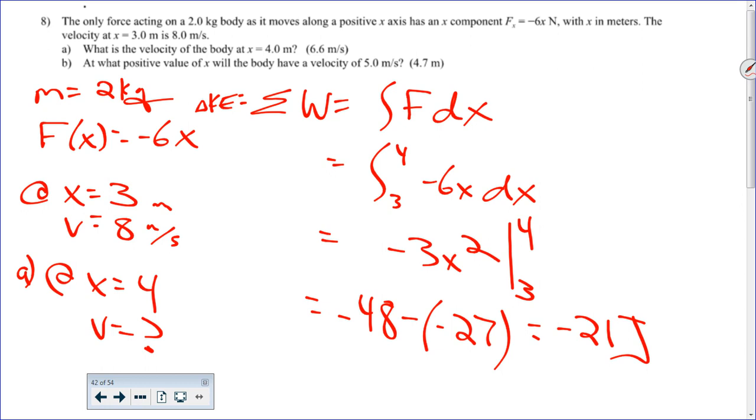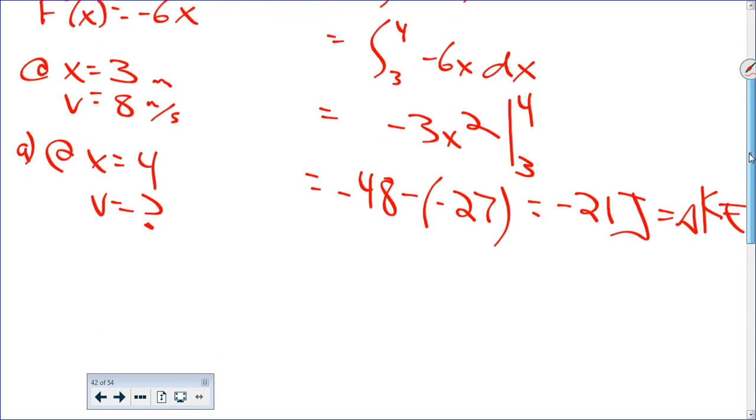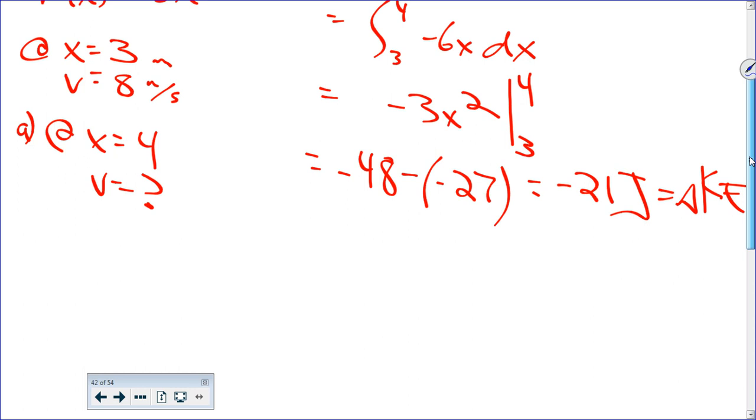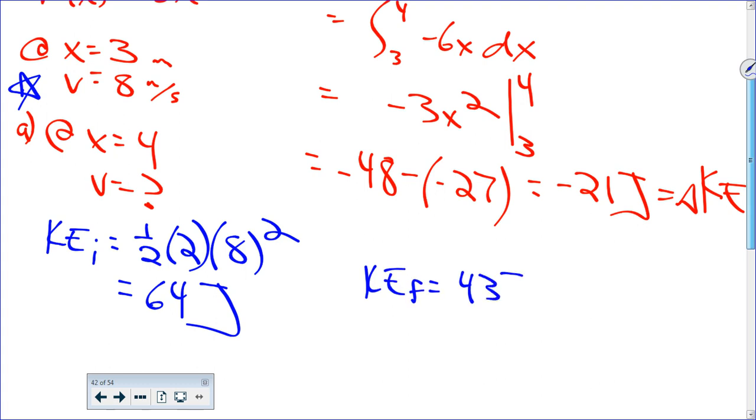All right, so what does this negative 21 joules represent you guys? Change in kinetic energy, right? So that means we lost, because it's negative, we lost 21 joules of kinetic energy. All right, so now we've got to figure out, well you guys tell me, what should I figure out? How much did I start with, right? So our kinetic energy initially is one-half the mass, wasn't the mass 2, times the velocity squared, so that's going to give us 64 joules. Lose 21, so that means that my KE final is what, 43 joules? And now you can solve for velocity, right?